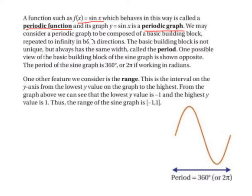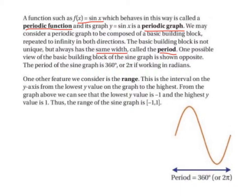We may consider a periodic graph to be composed of a basic building block, repeated to infinity in both directions. The basic building block is not unique, but always has the same width, called the period. One possible view of the basic building block of the sine graph is shown opposite. So this is the period of 360 degrees or 2pi, and this is what repeats itself.